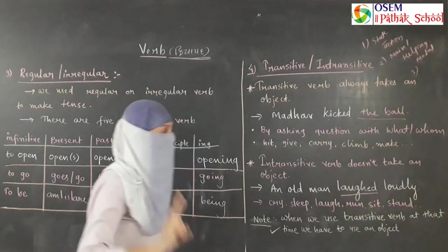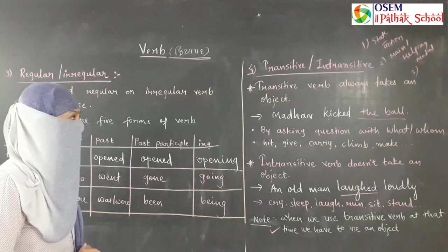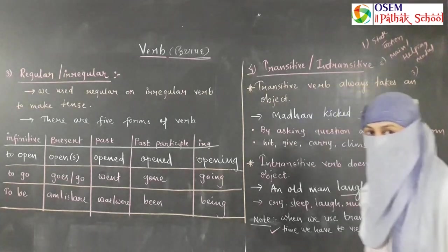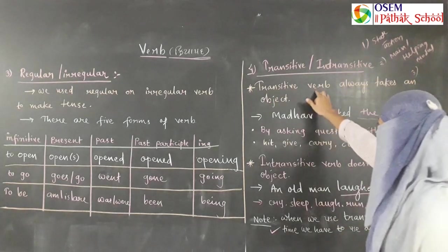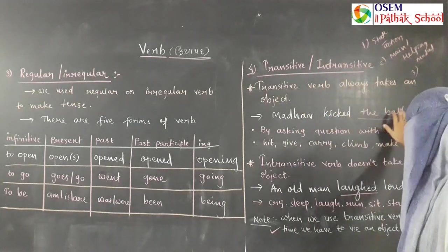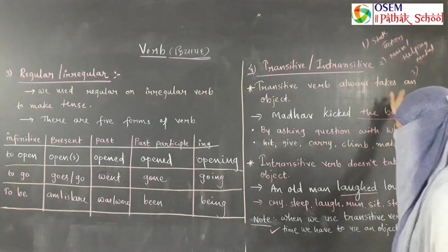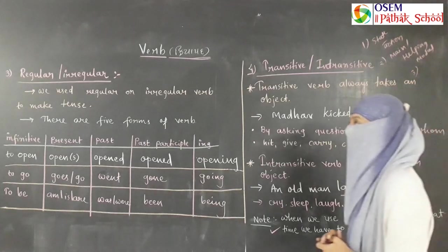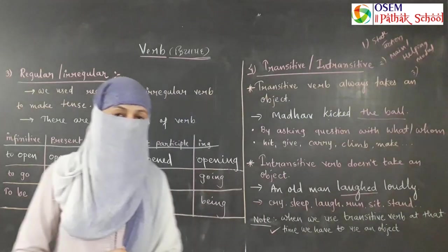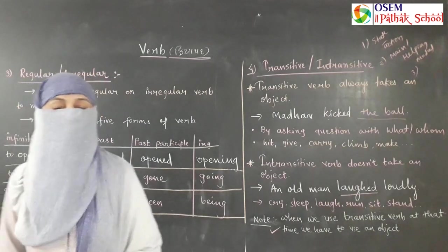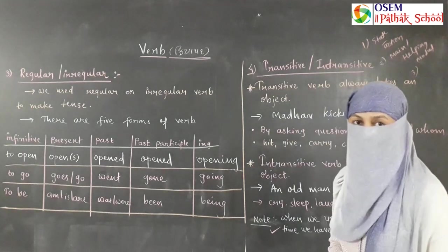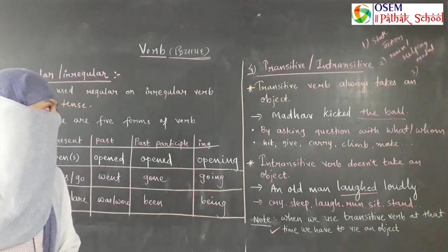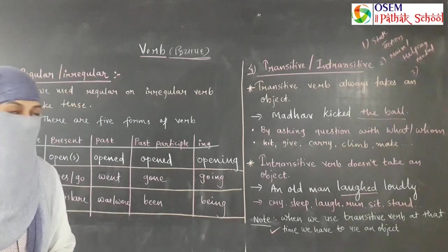To summarize, we learned about four types of verbs and two common mistakes in English. First, you cannot use the -ing form with a state verb. Second, when you use a transitive verb, you must always use an object. Understanding verbs will help make your language more effective when writing essays, applications, and other written work. Thank you.